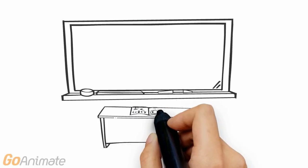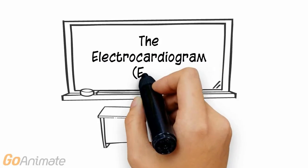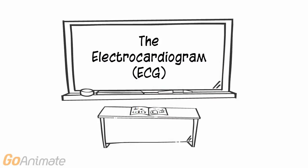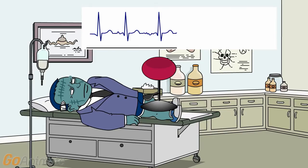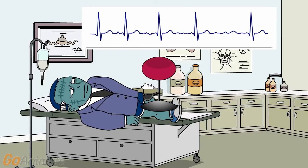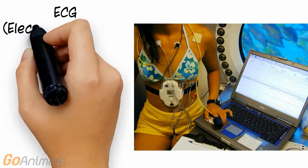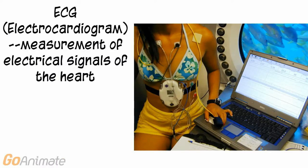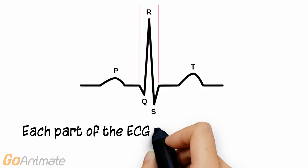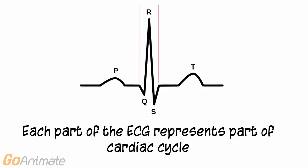Let's learn about the electrocardiogram, or ECG. The ECG is a measurement of the electrical signals of the heart. Each part of the ECG represents part of the cardiac cycle.